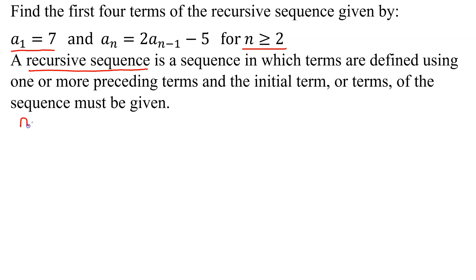We're going to start when n equals 2. So up here, wherever you see an n, I'm going to put a 2. So a sub n, which is a sub 2, equals 2 times a sub n minus 1, so that's 2 minus 1 minus 5.